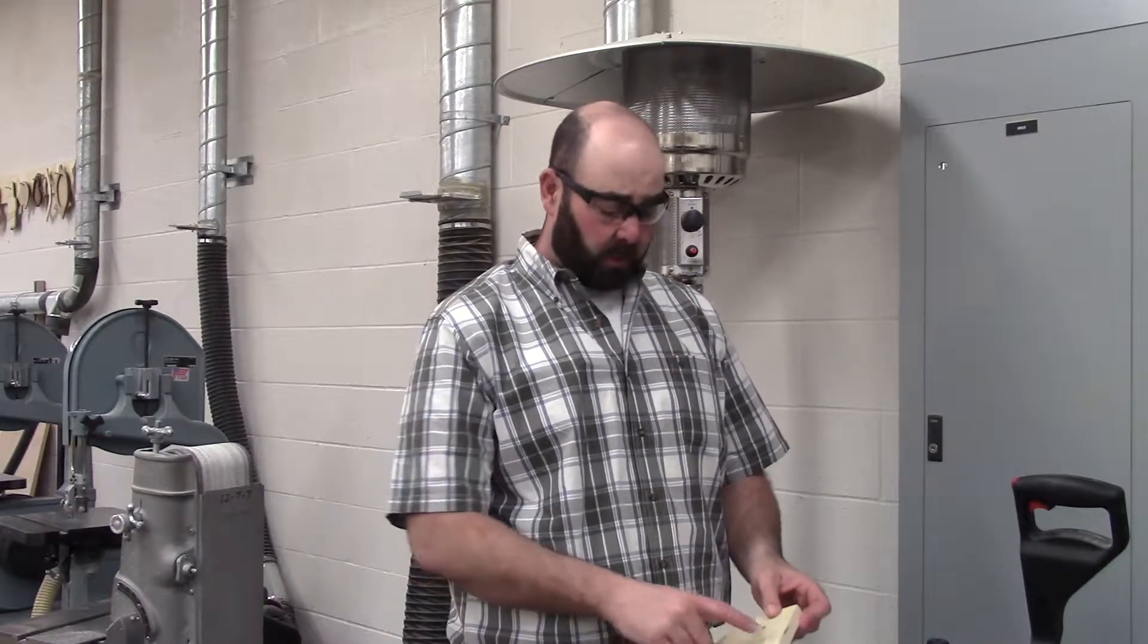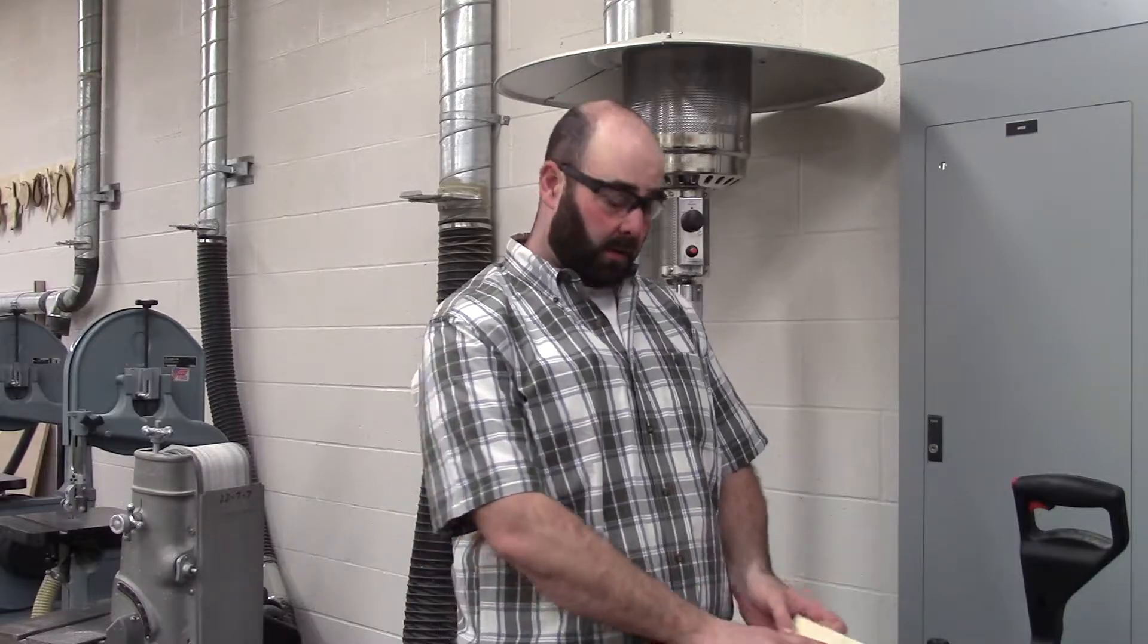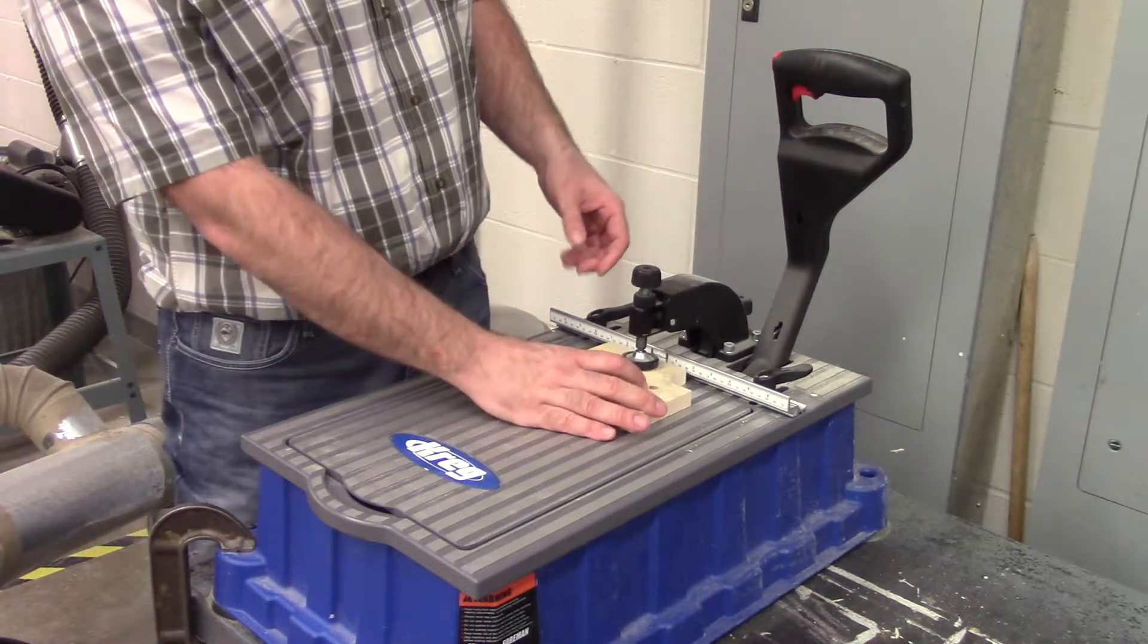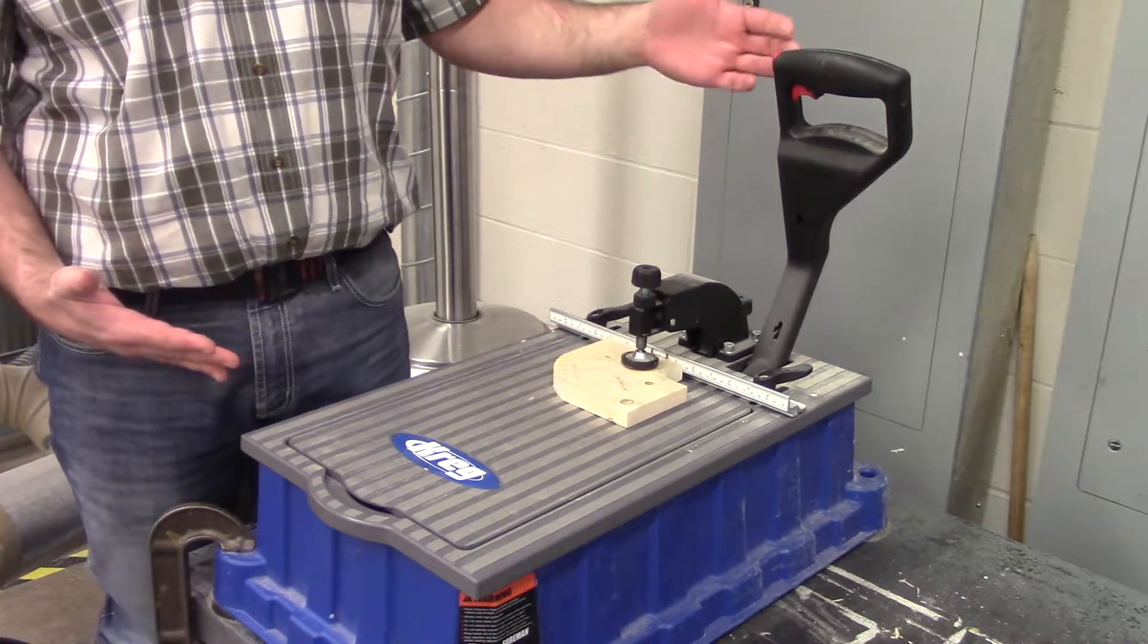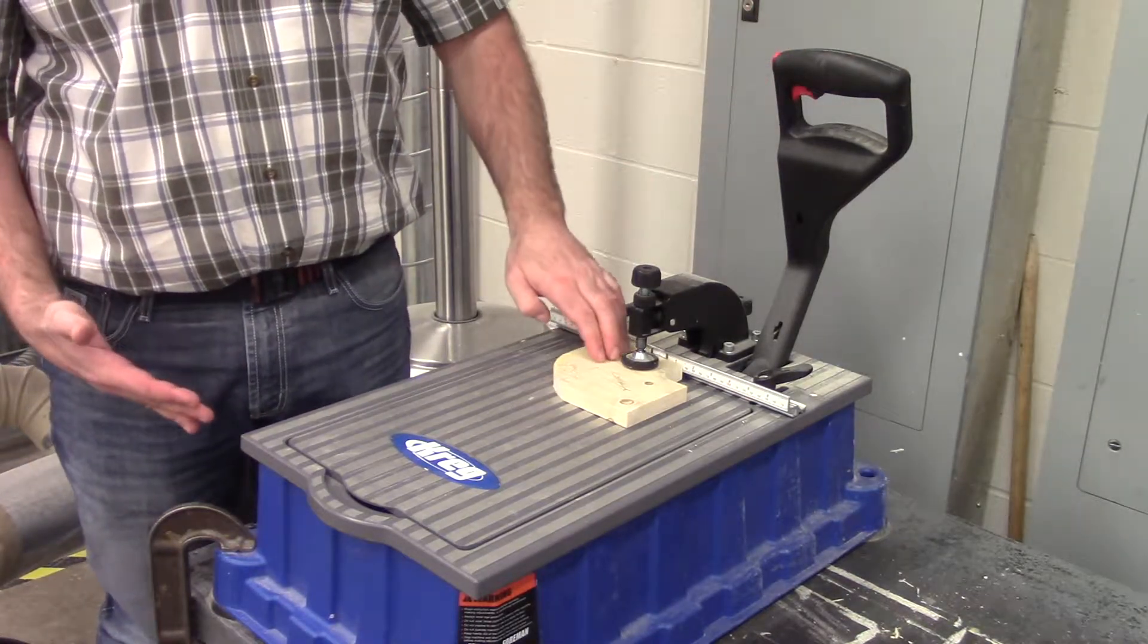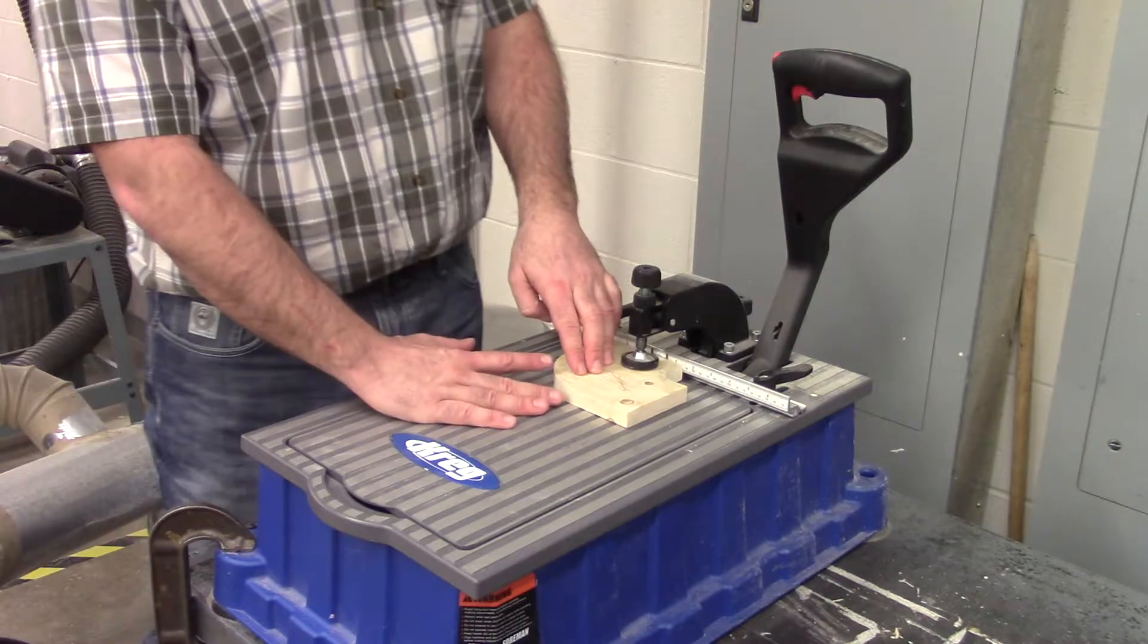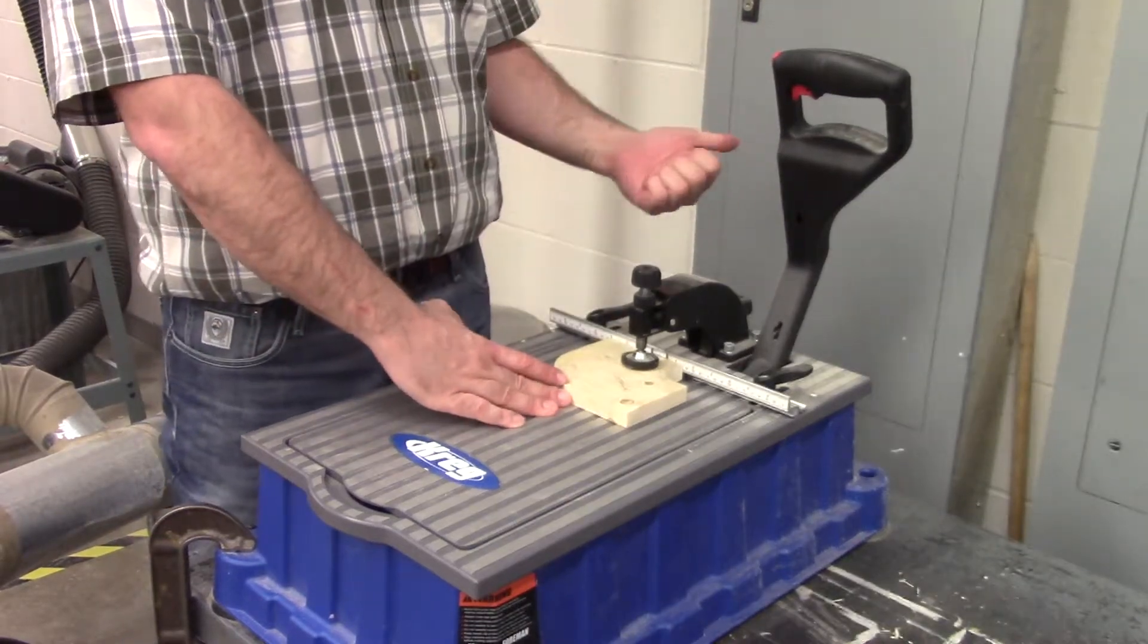In this particular case, we're going to line up the line that's on our piece here with the center point where the drill is going to come up. When we run this handle down, it self-clamps this piece of wood. So all we have to do is maintain pressure forward.